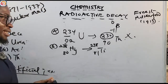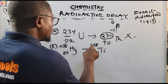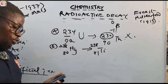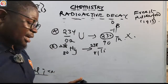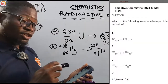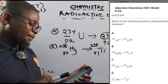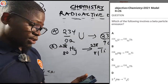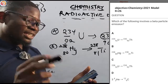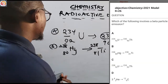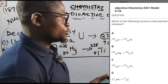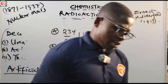Option B: ²³⁸₈₀Hg → ²³⁸₈₁Tl. The nuclear mass did not change, and the nuclear charge increased by 1 unit. That matches beta decay perfectly, so the correct answer is option B. Option C shows the nuclear mass reducing by 4 units while the nuclear charge remains unchanged — that is not beta decay. Option D also does not match. The correct answer is option B.